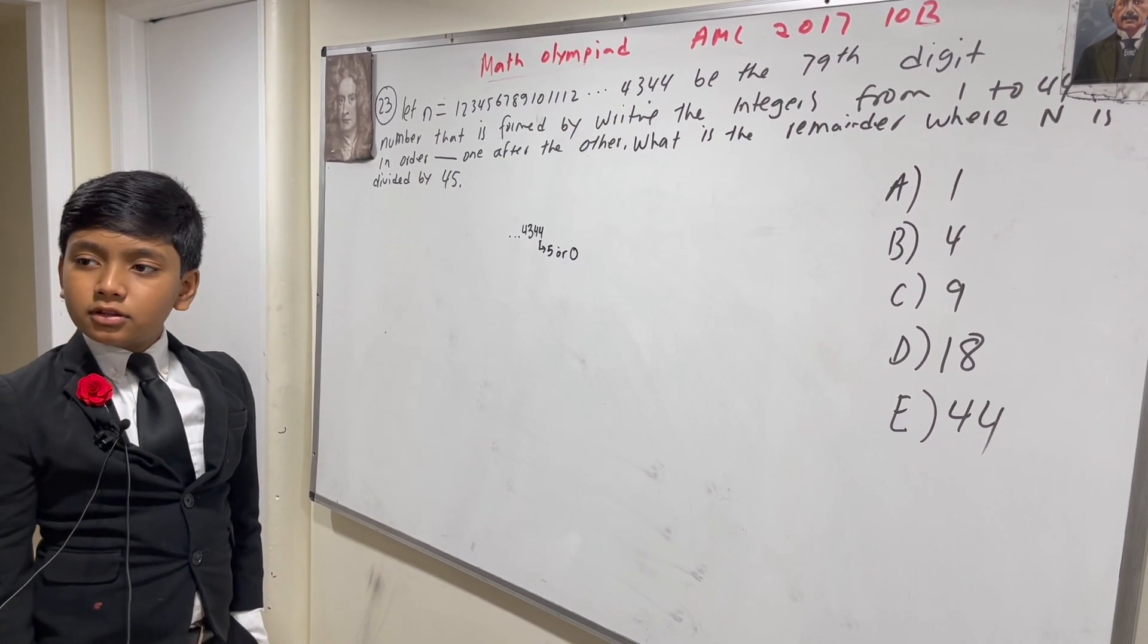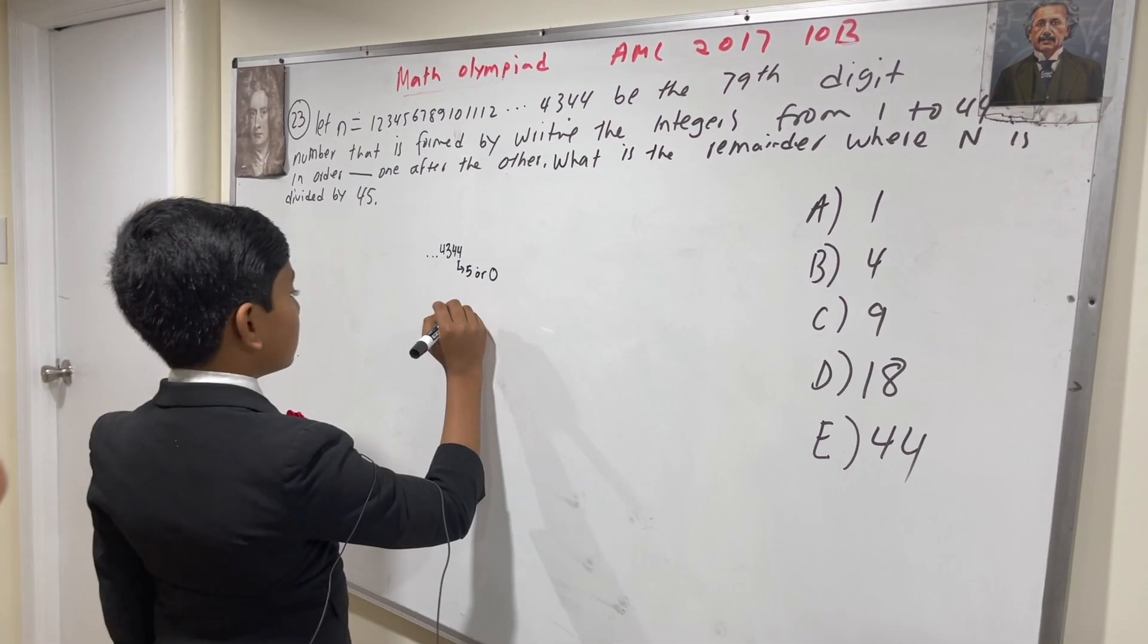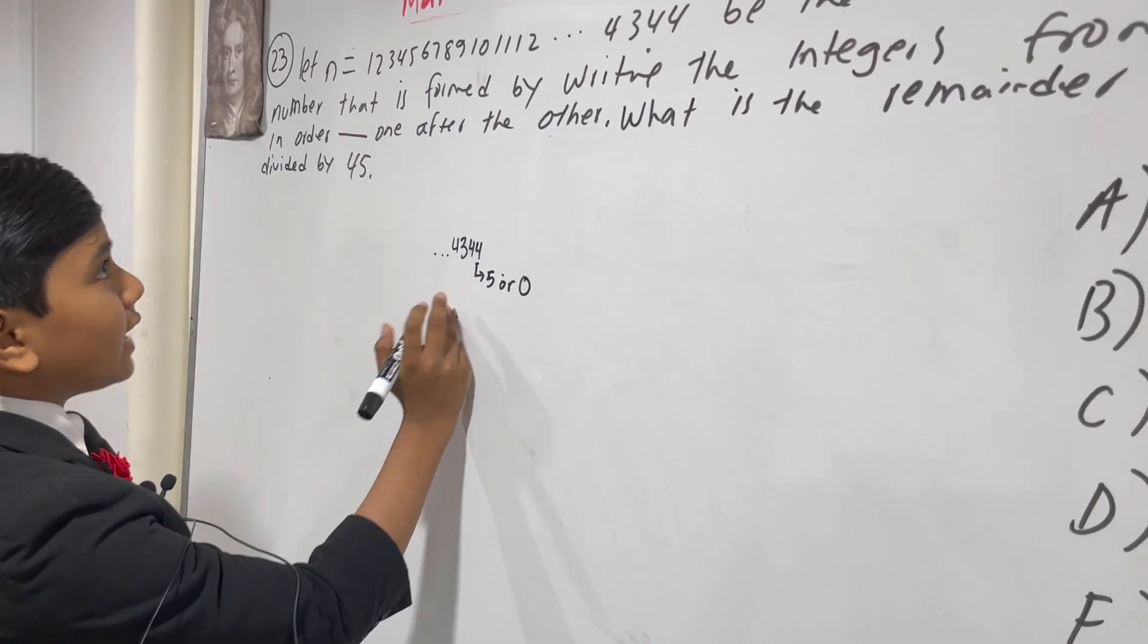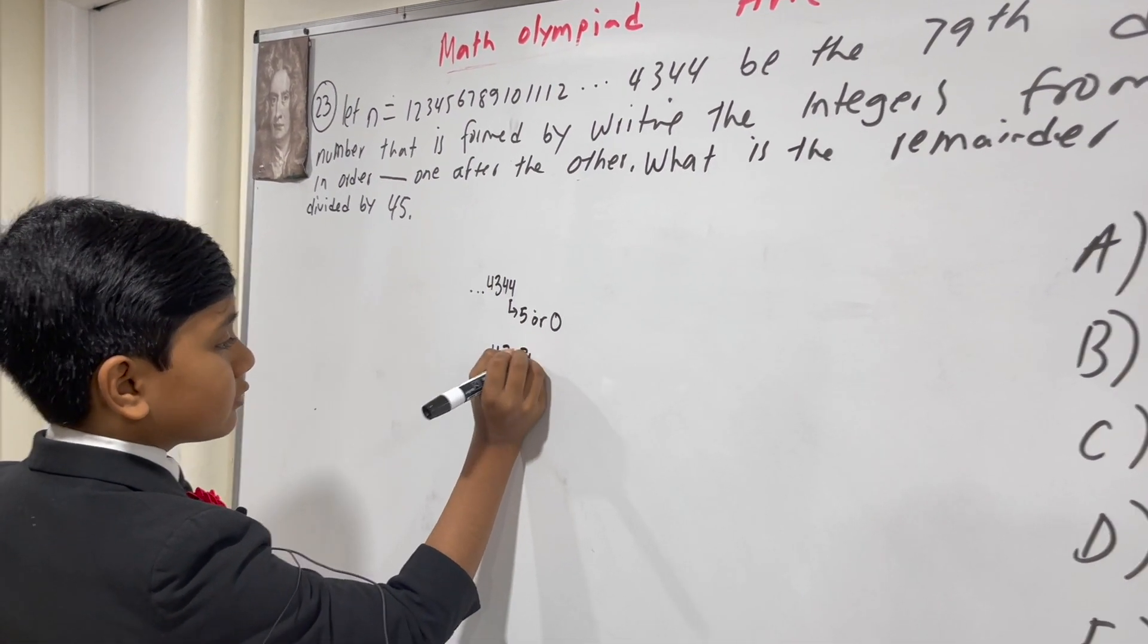However, what we do know is that it is divisible by 9. How? Well, let's say we take all of these and add them up. So 1 plus 2 plus 3 plus 4.